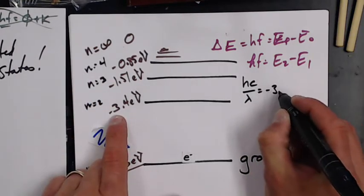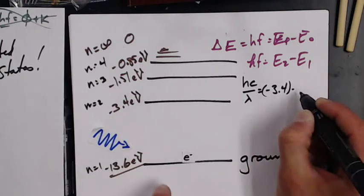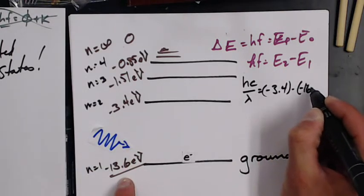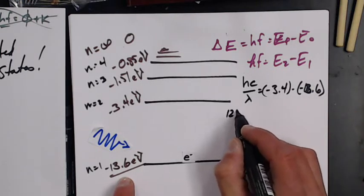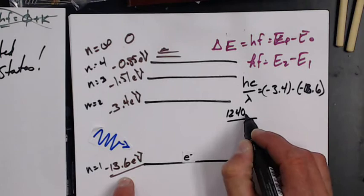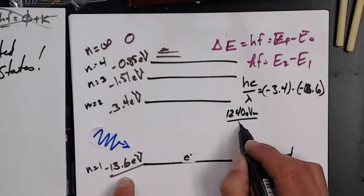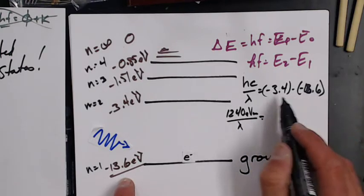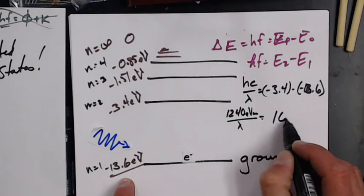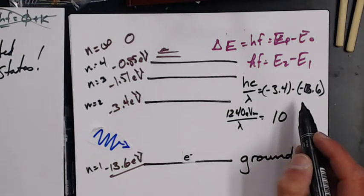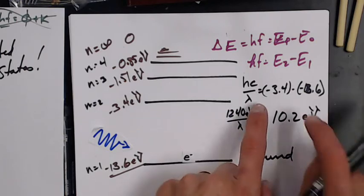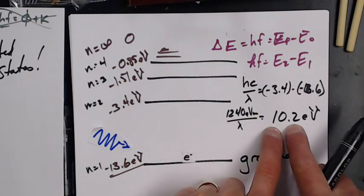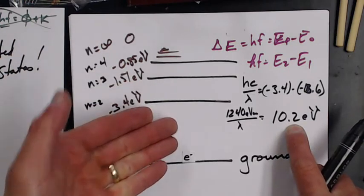Minus negative 13.6. So hc - I know this by heart already - is 1240 electron volt nanometers with a wavelength. And 13.6 minus 3.4 becomes 10.2 electron volts. Notice my negatives all cancel and I have a positive value now because energy is being absorbed.